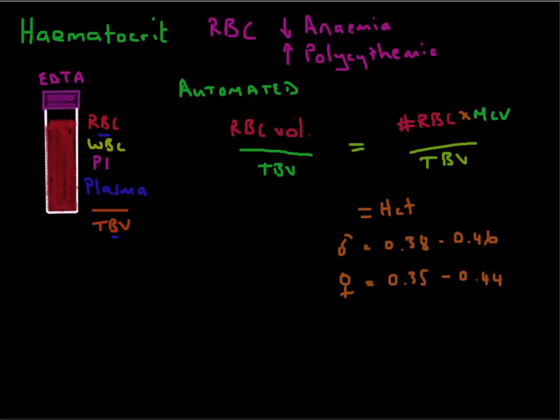So what do we do with these values? Well, these values can give us an indication, as I said in the beginning, of whether they would be anemia or polycythemia. If the hematocrit, in other words, is decreased, then we say the patient has anemia.